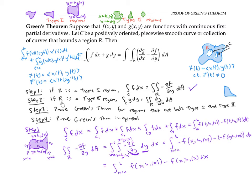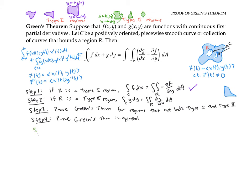The proof of step two is almost exactly like the proof of step one, so I invite you to pause the video and work it out for yourself. For step two, we start with a type two region. The bottom side is at y equals c and the top side is at y equals d. Once again, I'll divide my boundary into four pieces — C₁, C₂, C₃, C₄ — oriented positively, and get to work parameterizing my four curves.